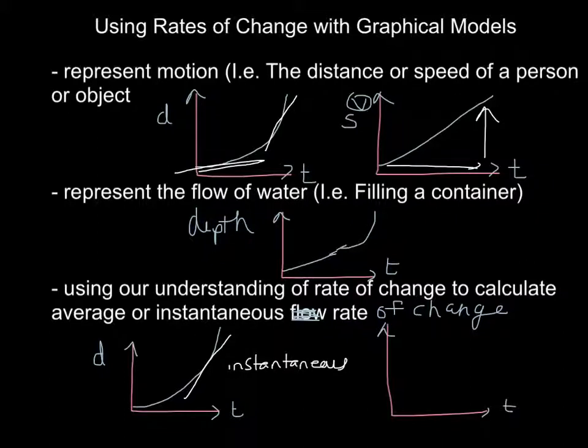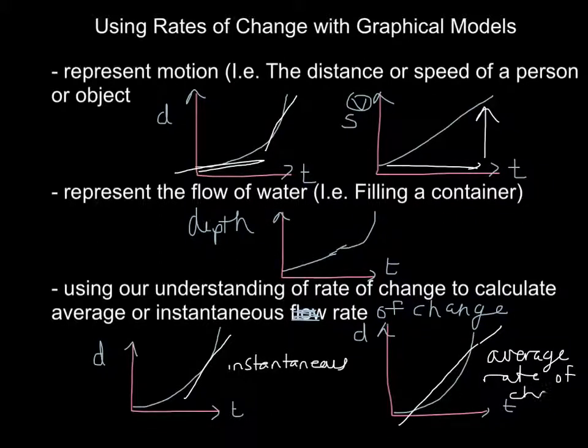We can also use this, just like you did in the graphing section, to find an average flow rate or average rate of change between two points using a secant. If we have a secant, we can use that to find the slope, which will give us the average rate of change.